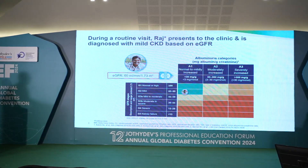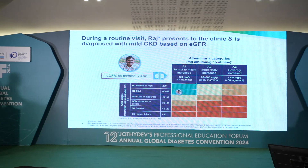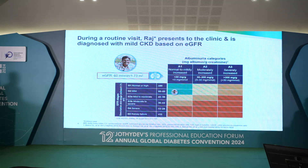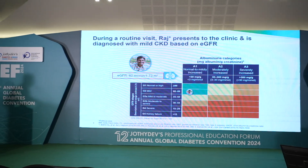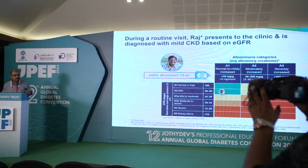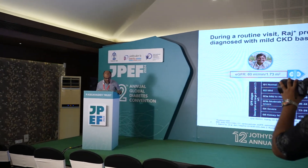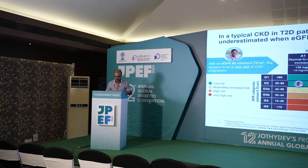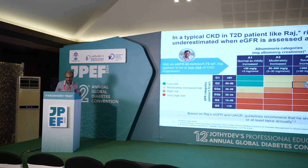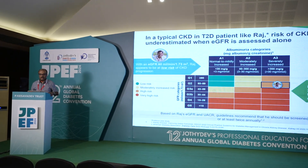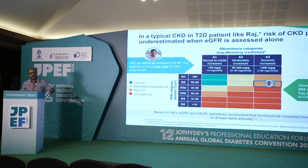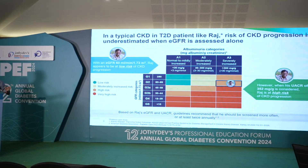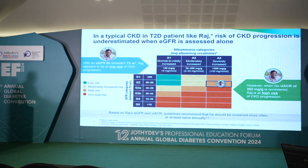The two things we need to assess for a patient with type 2 diabetes when evaluating kidney function are: first, creatinine to calculate eGFR — this patient is at an eGFR of 60 ml/min. Second, the UACR (urine albumin-creatinine ratio) — this patient has a UACR of 352 mg/g, placing him in a very high-risk zone for diabetic kidney disease progression and risk of future hemodialysis.